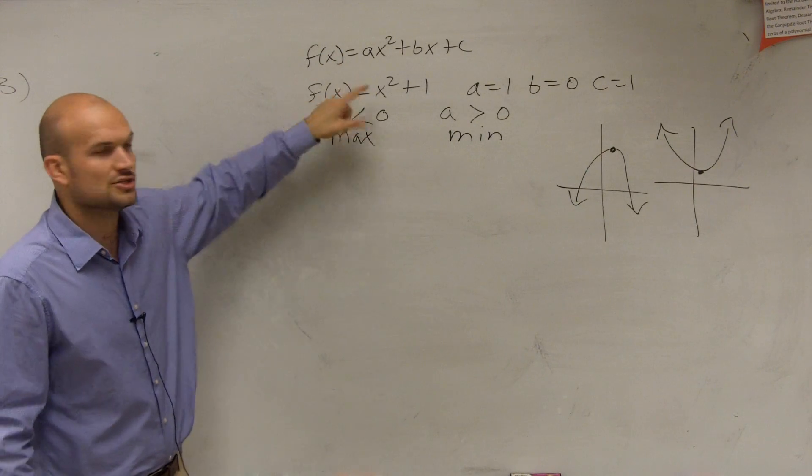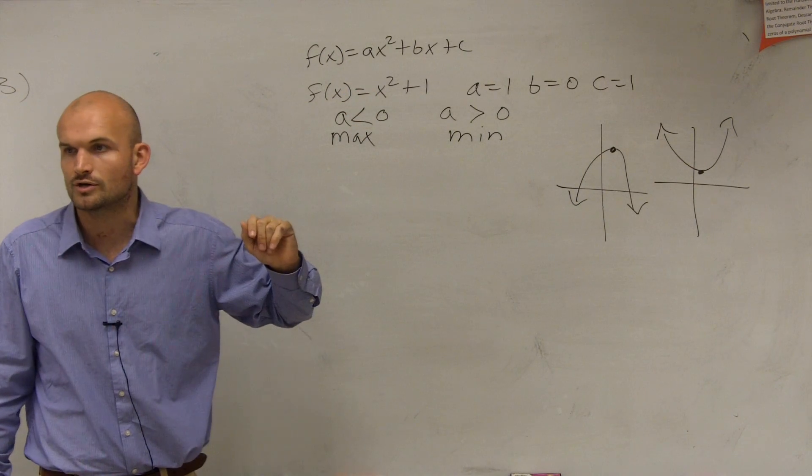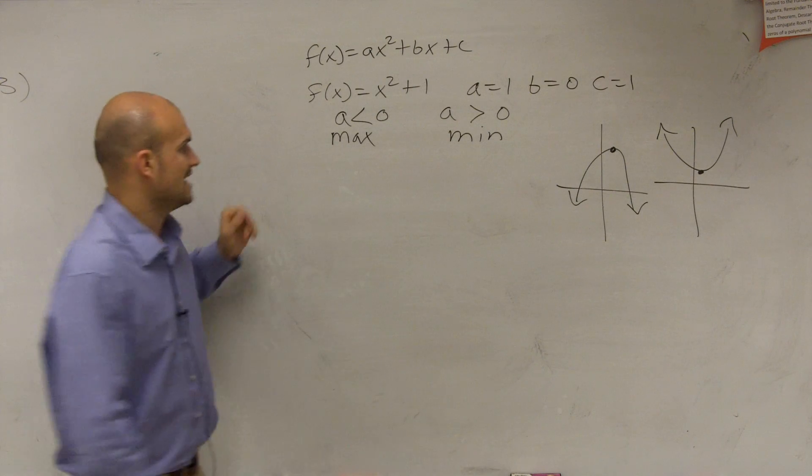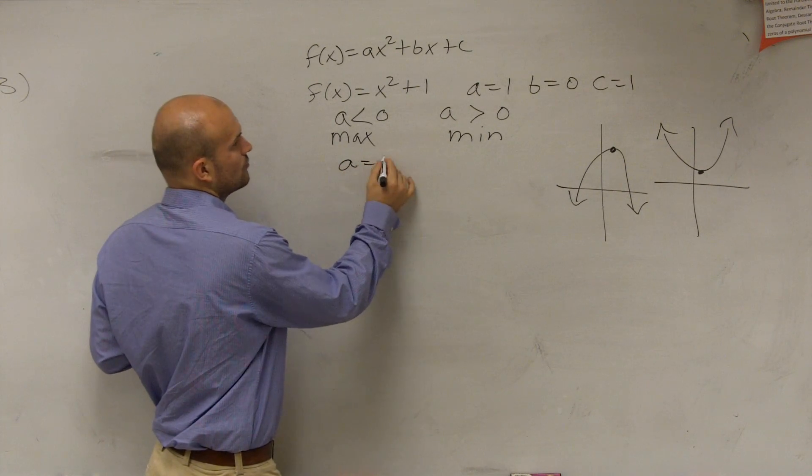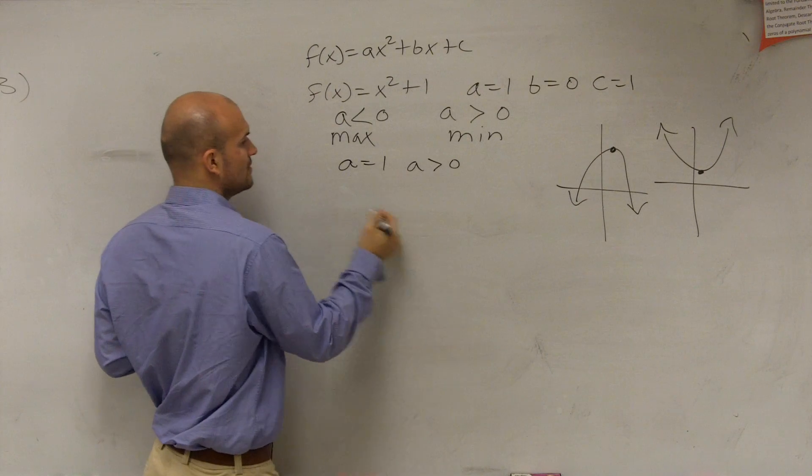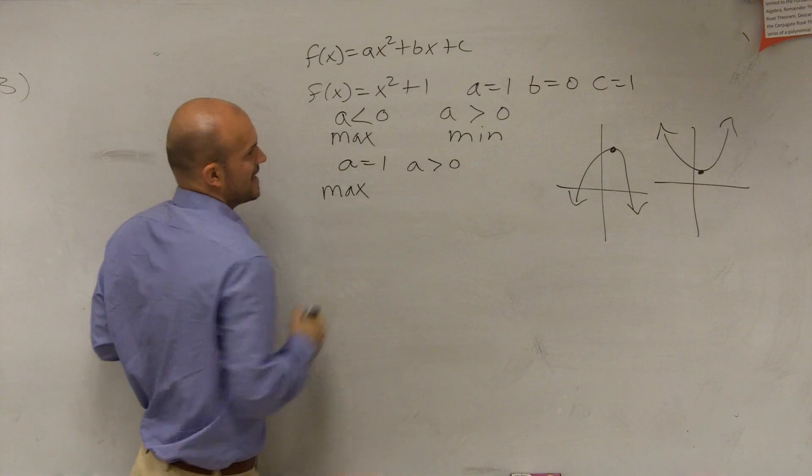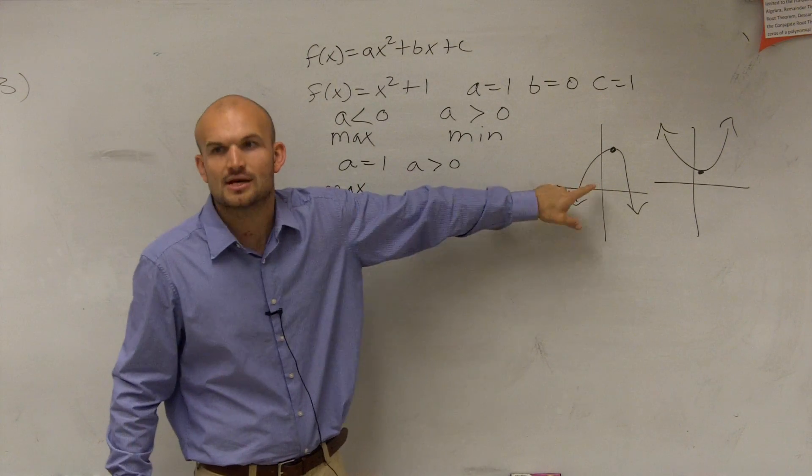So in my function, do I have a is less than 0 or greater than 0? A is greater than 0, because a is equal to 1 in my problem. So therefore, a is greater than 0. So therefore, I have a maximum value. That means my graph is going to look something like this.